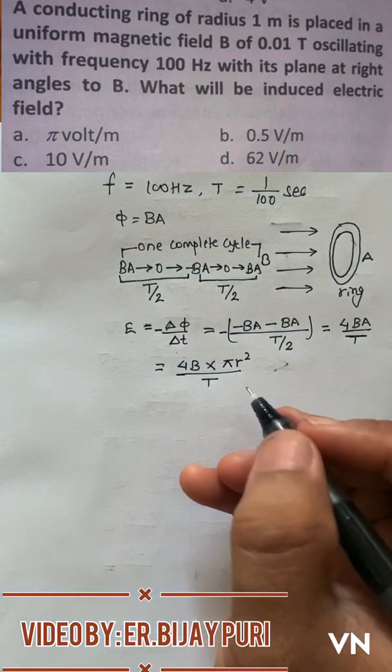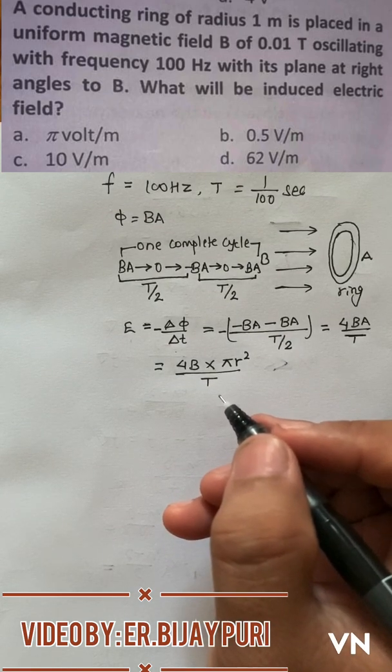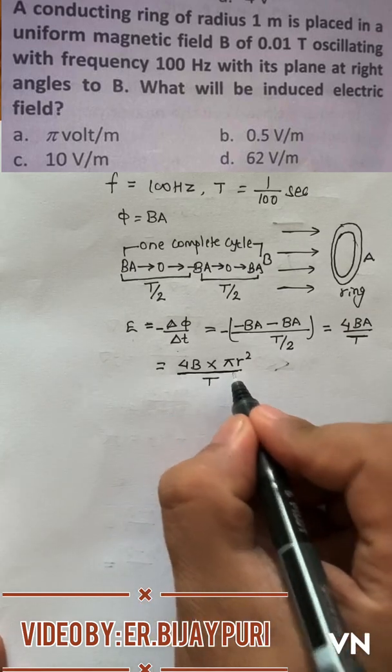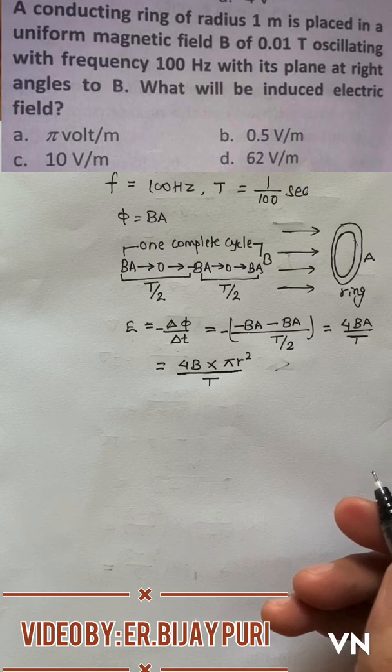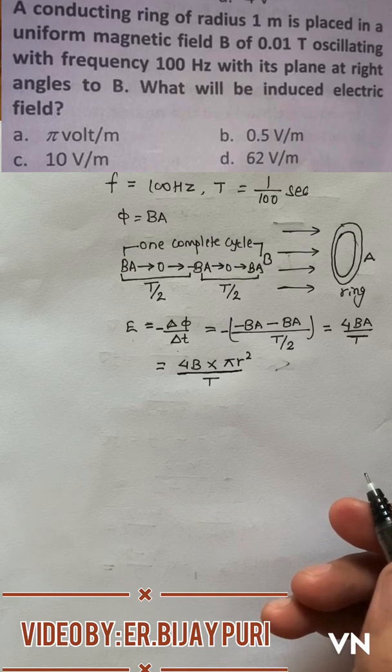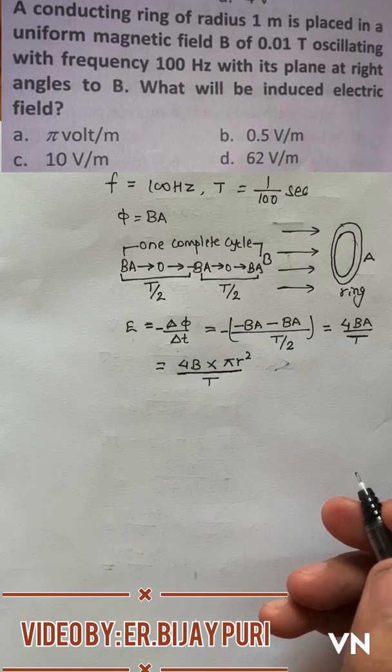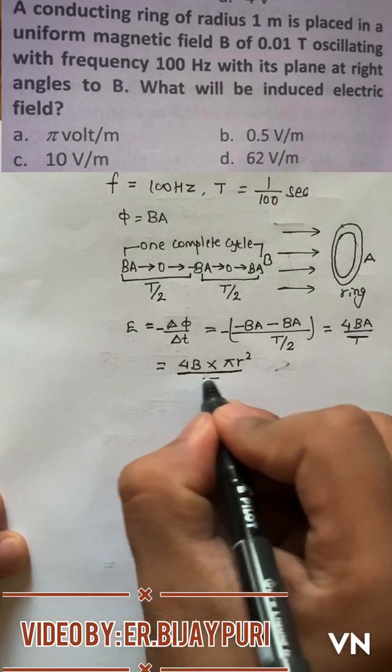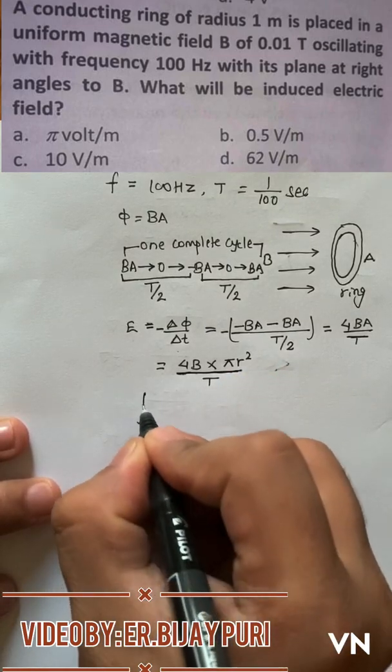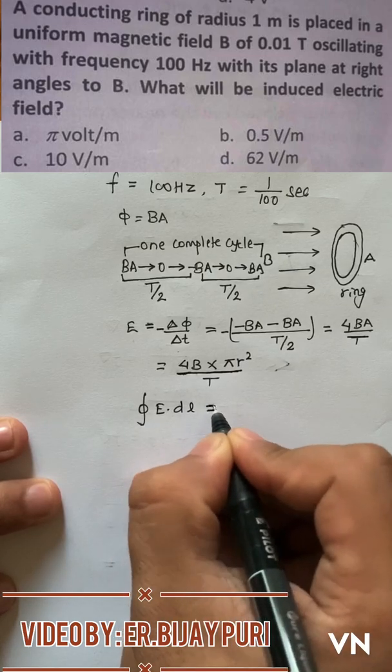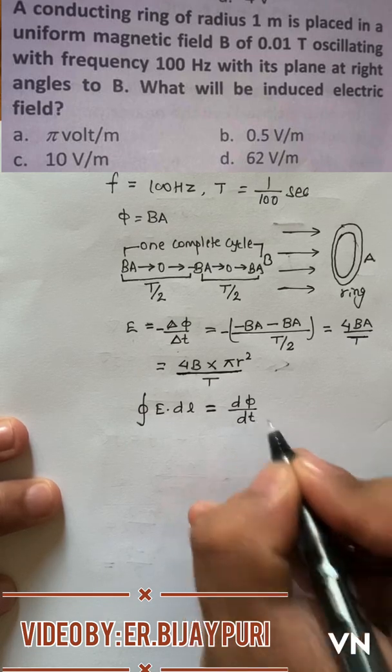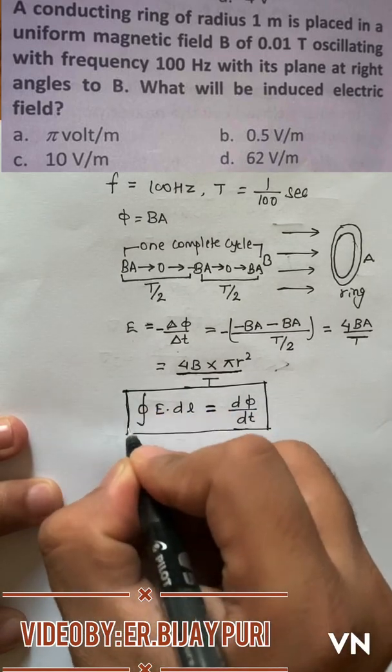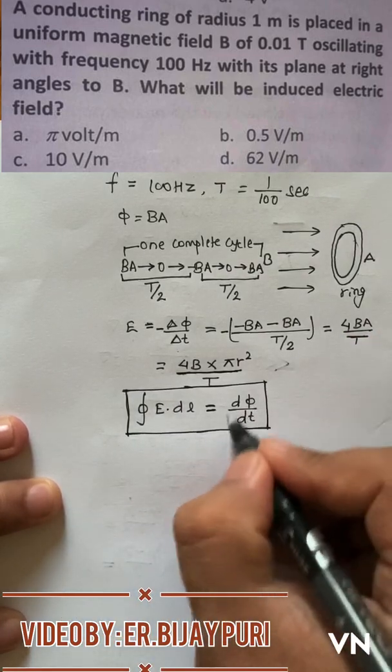But remember the question has asked us to find induced electric field. In this case we must have the relations of electric field and induced emf. So in that case we can define electric field as induced emf. If you people know that relation, then that will be very good. But in case of these types of closed loop we evaluate electric field from emf theory. That emf theory is given by the line integral of electric field is equal to the rate of change of flux.